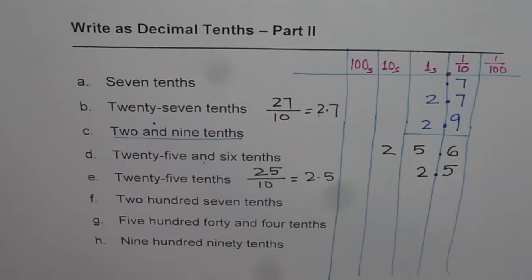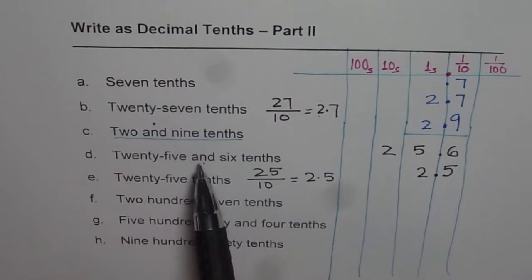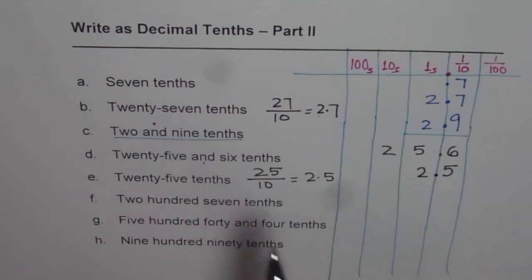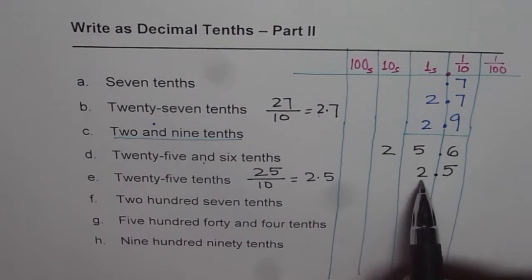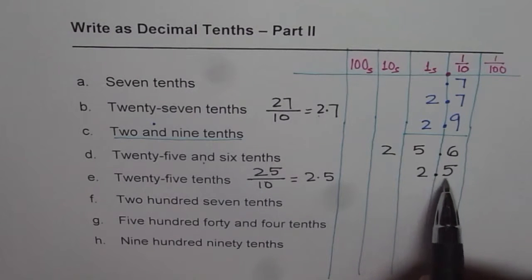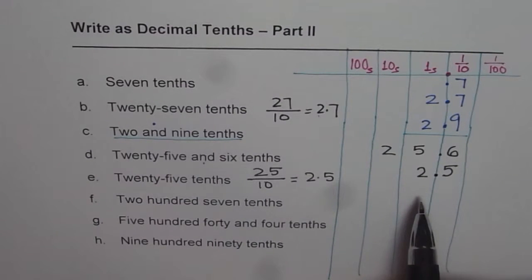In this part two, we kind of mixed up the numbers with 'and' so we can say a number in two different ways. We can also say this as two and five tenths, which is the same as twenty-five tenths. Do you understand?